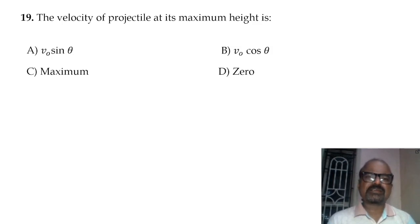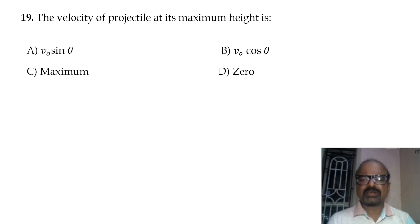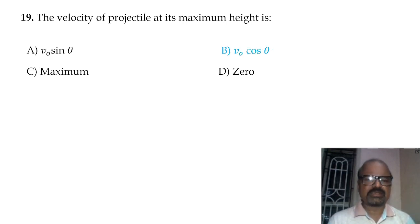The velocity of a projectile at its maximum height — at maximum height the vertical component is zero, so the velocity equals v0 cos theta.